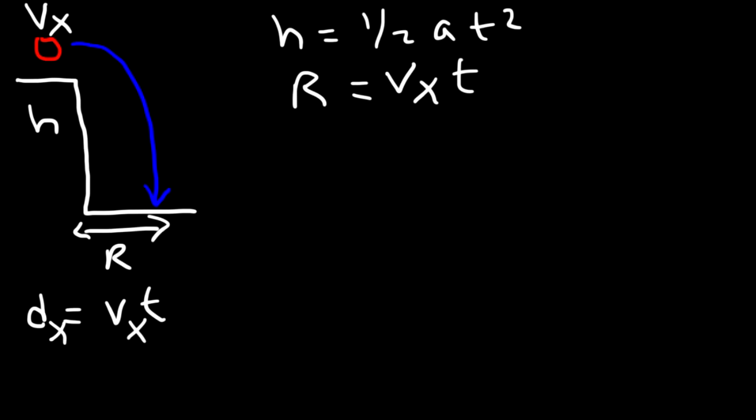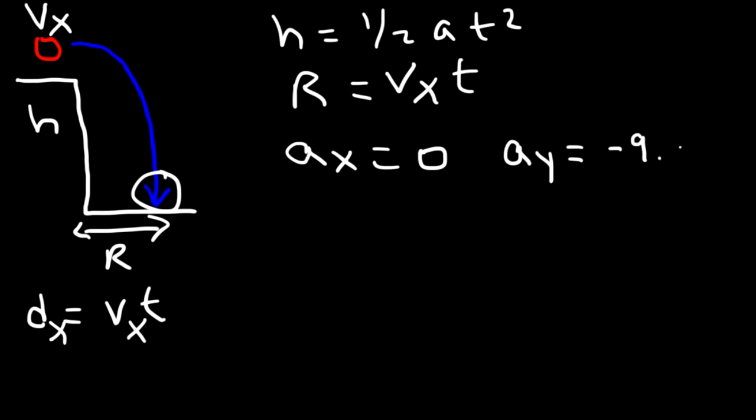Sometimes you need to find the speed of the ball just before it hits the ground. Whatever V_x was at the beginning, V_x remains the same — for projectile motion, V_x does not change. The acceleration in the x direction is zero, so V_x is constant. The acceleration in the y direction is gravitational acceleration, negative 9.8, so V_y changes.